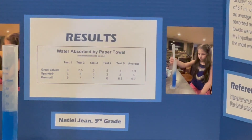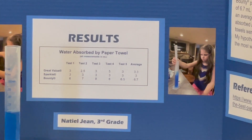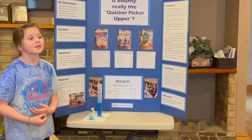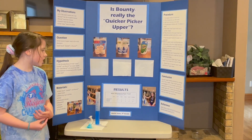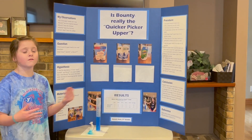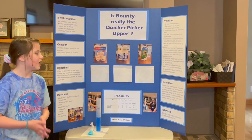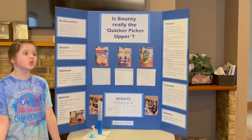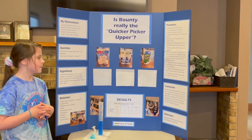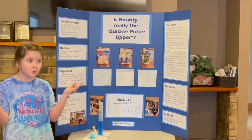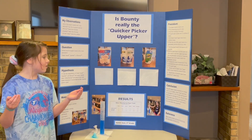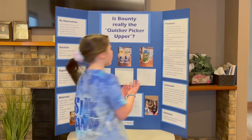For Bounty, test 1 was 6, test 2 was 7, test 3 was 8, test 4 was 6, and test 5 was 6.5 ml. In conclusion, Bounty paper towels absorbed an average of 6.7 ml of water. Great Value absorbed an average of 3.3 ml, and Sparkle absorbed an average of 3 ml. Bounty paper towels were over 2 times more absorbent than Sparkle. My hypothesis was supported.